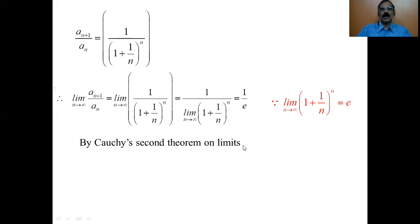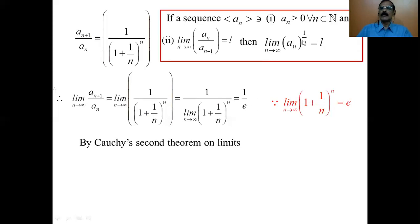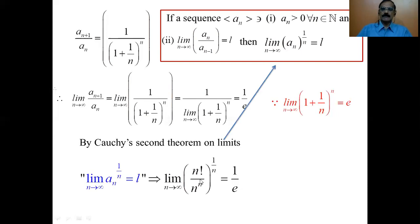By Cauchy's Second Theorem on limits: the first condition is that a_n is greater than 0, which is trivially satisfied since every term is positive. We have shown the limit of a_{n+1}/a_n as n tends to infinity is 1/e. Therefore by the theorem, the limit of the n-th root of a_n is also 1/e. Since a_n is n factorial divided by n to the power n, we conclude that the limit of n factorial to the power 1/n divided by n as n tends to infinity equals 1/e.